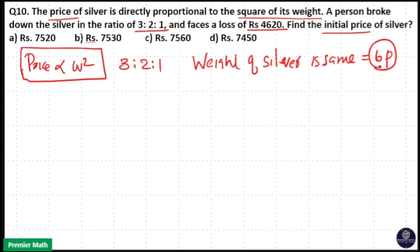Initially the weight was 6 parts, and 6 part silver is broken into 3 part, 2 part, and 1 part. So one single piece is broken into 3 pieces.